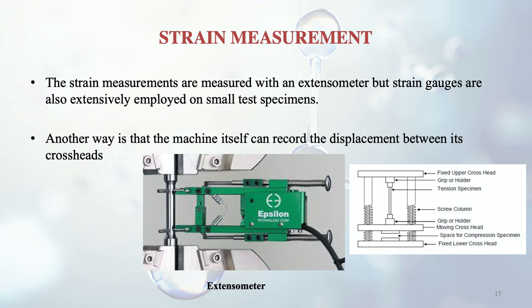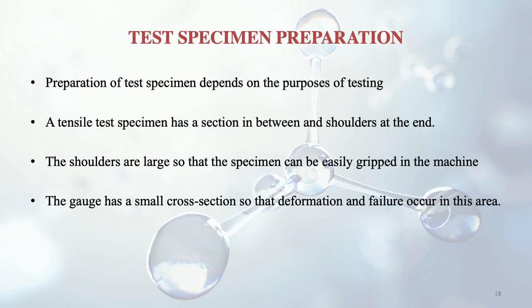Before starting the simple tension test, the test specimen must be prepared. A tensile test specimen has a middle section and shoulders at the ends — similar to a dumbbell, where the middle portion is thinner and the ends have a larger diameter. The shoulders allow the specimen to be easily gripped in the machine, while the smaller cross-section in the gauge region ensures that deformation and failure occur there.